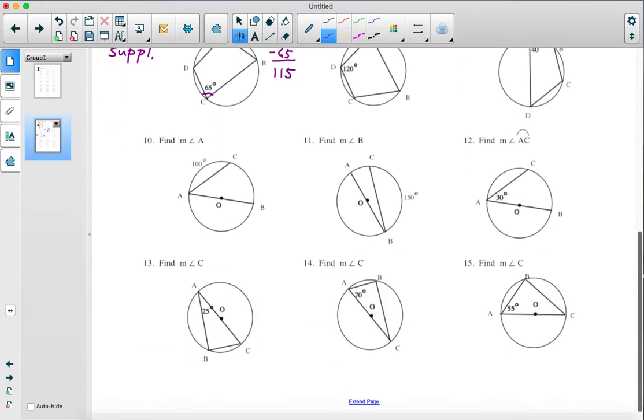Going down to number 10, they're giving you an inscribed angle and want the measure of angle A. Notice side AB goes through the center of the circle O. That means AB is a diameter. If AB is a diameter, then the arc from A through C to B is a semicircle, which is half of a circle, so half of 360 is 180 degrees. The measure from A through C to B of that arc is 180. They're giving us that A to C is 100, so that leaves C to B to equal 80. Now we can find angle A because it's like problem number 1. If arc C to B is 80, then the inscribed angle is half of that, which is 40 degrees.